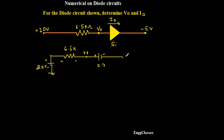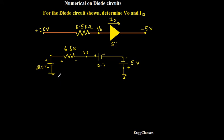And then I have another supply voltage of minus 5 volt. So I indicate minus 5 volt this way: negative, positive, and connected to ground — so this is negative, this is positive 5 volt. Now the simplified circuit diagram is complete and I can apply KVL very easily.